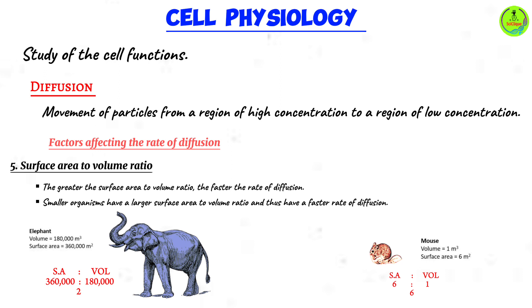Such organisms tend to have a faster rate of diffusion. You're going to have a faster rate of diffusion in the rat as compared to the elephant. So smaller organisms have a higher surface area to volume ratio than larger ones, therefore they have faster rates of diffusion.